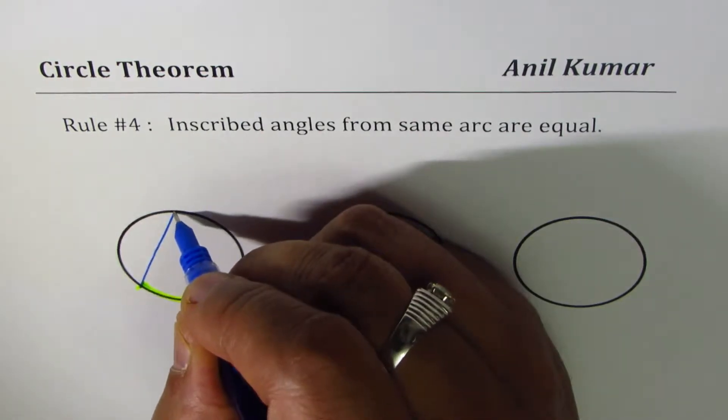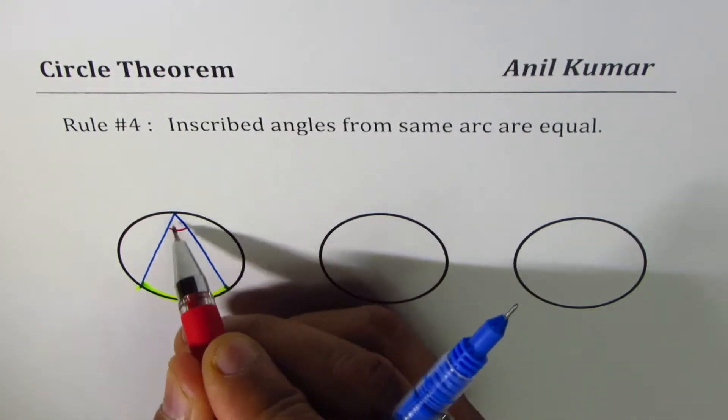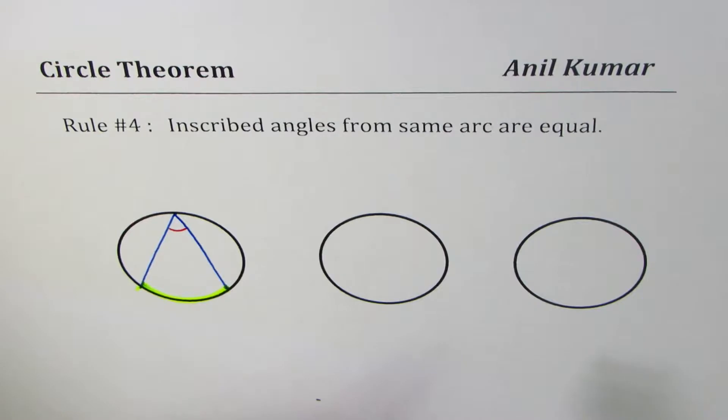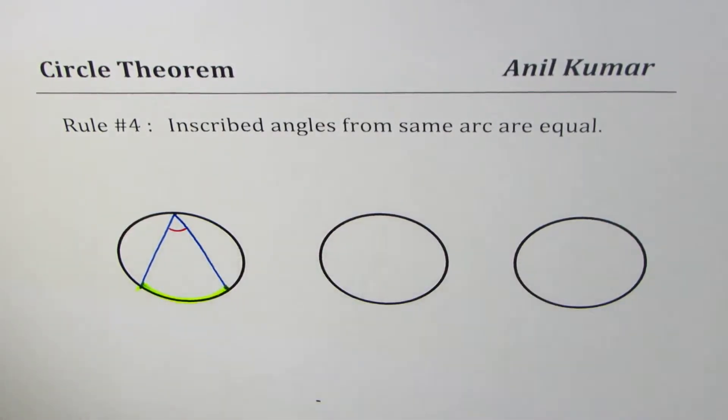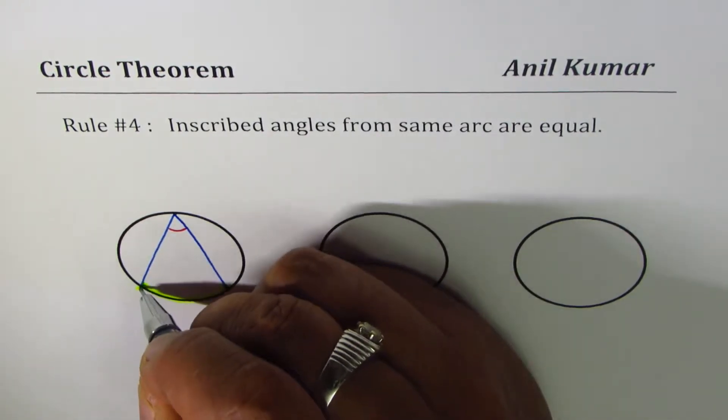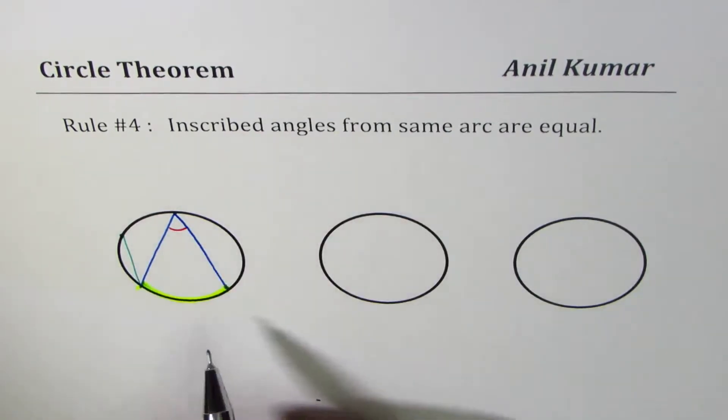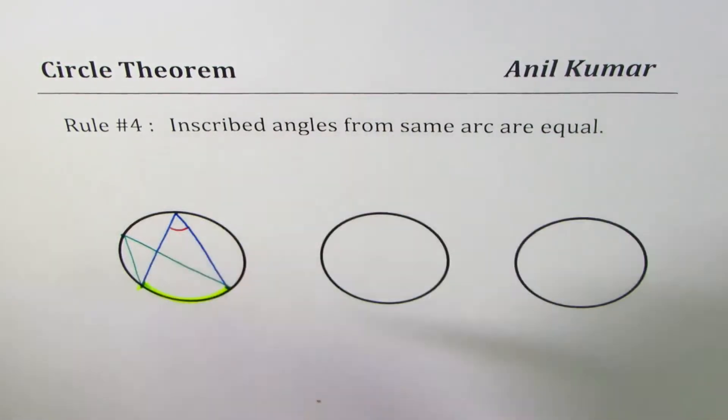Then the angle which you get is the inscribed angle. It says inscribed angles from same arc are equal. So that is one angle. For example, you could find many angles since the set of points on the circumference are infinite. Let's take another point on the circle circumference as this one. Both are inscribed angles with the same arc, which means that these two